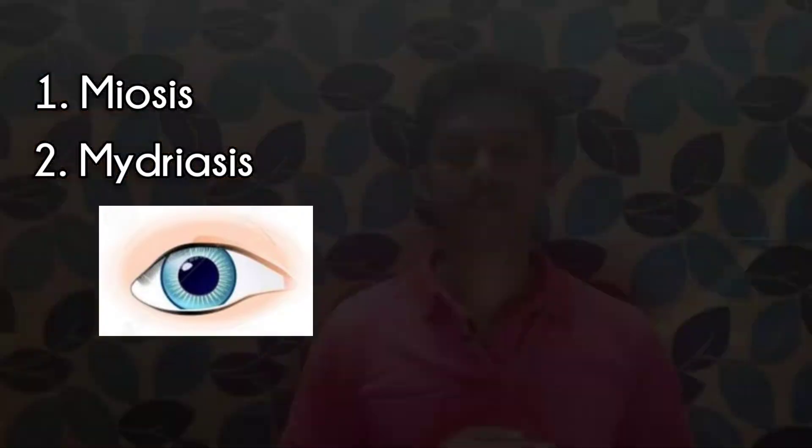The second medical term is mydriasis. Mydriasis is the opposite of miosis — the pupil is relaxed and enlarged. This is called a dilated pupil. This condition is called mydriasis.